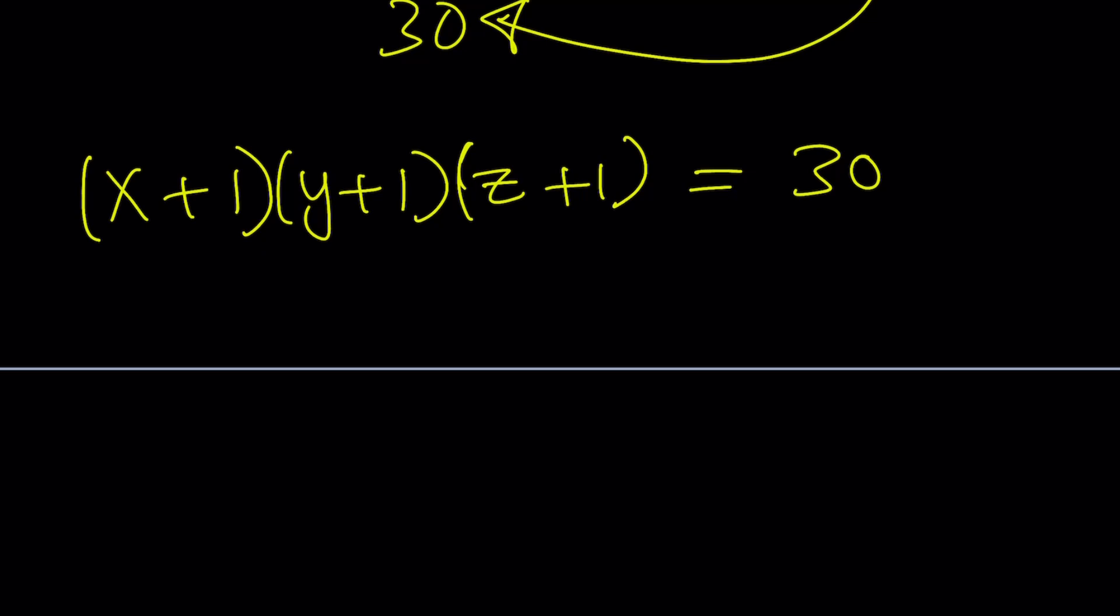All right, cool. So, let's go ahead and solve this problem. This is a very easy problem because think about it. We have three positive integers whose product is 30. But here's the thing. If 30 can be written as, for example, 30 can be written as 1 × 2 × 15.